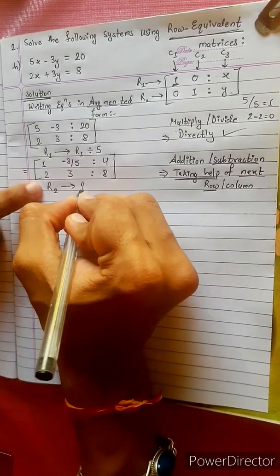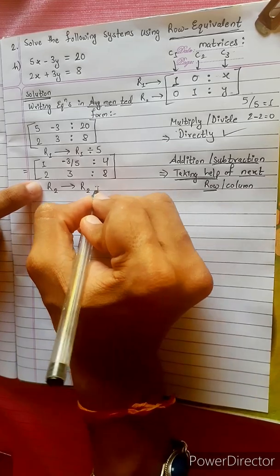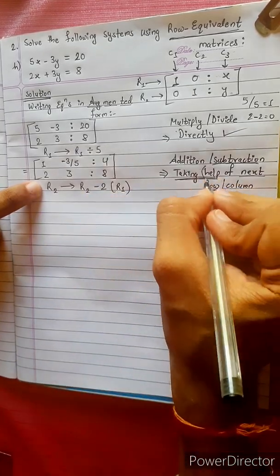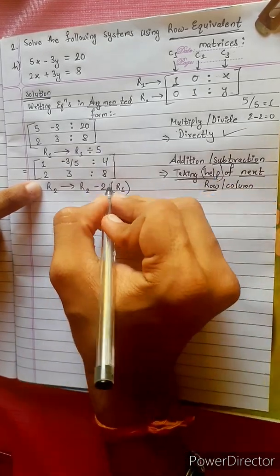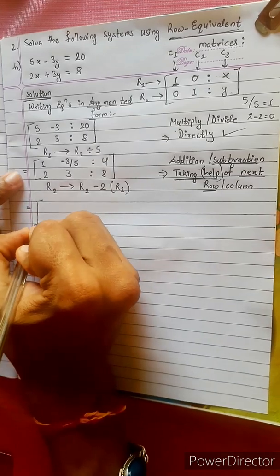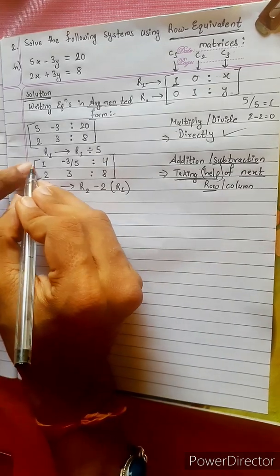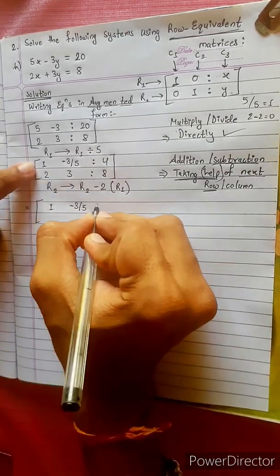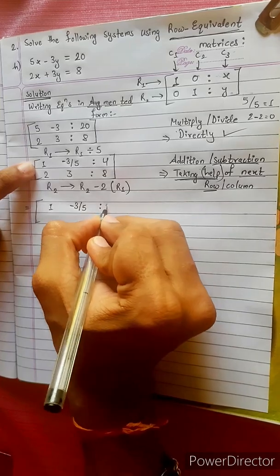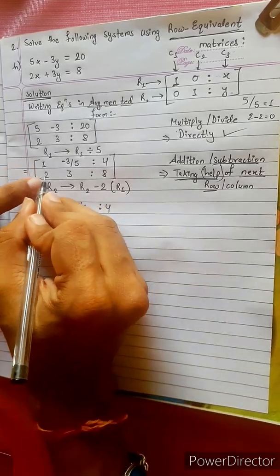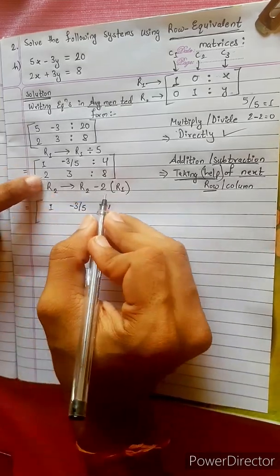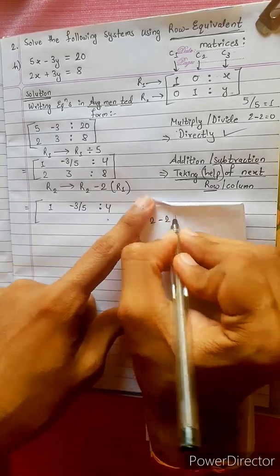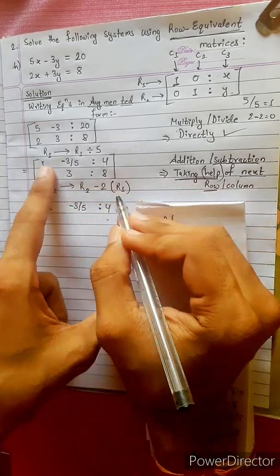R2 changes into R2 minus 2 times R1. For the first entry: 2 minus 2 times 1 equals 0. R1's first entry is 1, so 2 minus 2 is 0.